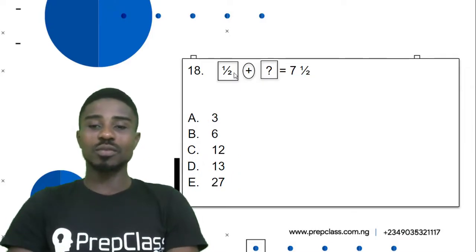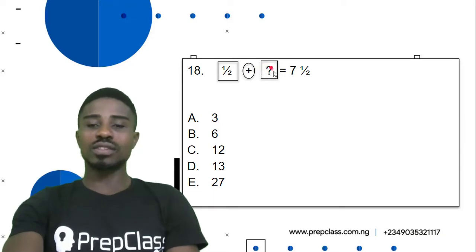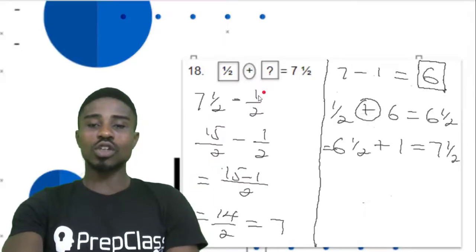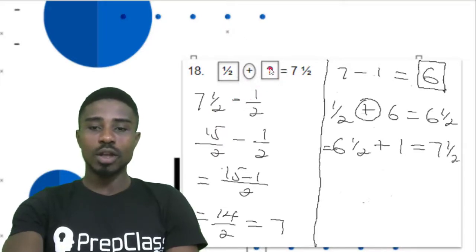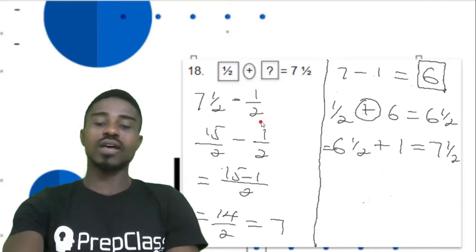Question 18. We have been asked to resolve this. So let's see how to get it done. So it ought to be half plus this number plus 1 will give us 7 and a half. So since we don't have this, we are going to start by saying 7 and a half minus half, the answer we will get. Then we will say minus 1. Then we will get our answer.